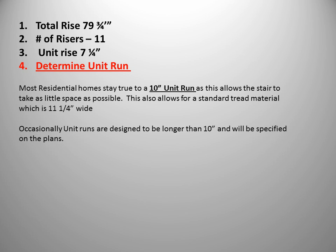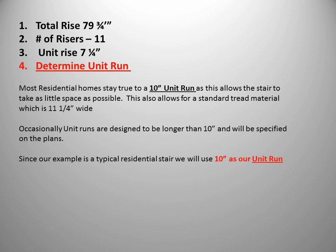Step 4: determine the unit run. Most residential homes use a 10 inch run. This allows the stair to take as little room as possible and accommodates standard tread material — OSB stepping material — which is 11 and 1 quarter inches wide. The additional 1 and 1 quarter inches is for the nosing to hang over the face of the riser. Occasionally, unit runs are designed to be longer than 10 inches and will be specified on the plans by the architect. For our typical residential stair, we will use 10 inches as our unit run.